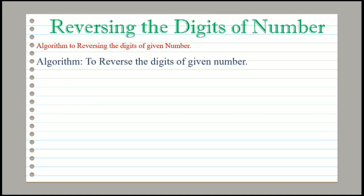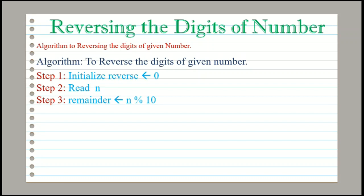The title is: Algorithm to Reverse the Digits of a Given Number. In Step 1, we will take one variable to save the reverse number and initialize it to 0. The statement is: initialize reverse equal to 0. In Step 2, we will take one input. The statement is: read n. In Step 3, we will find the remainder and use it to save the answer. The statement is: remainder equal to n modulo 10.